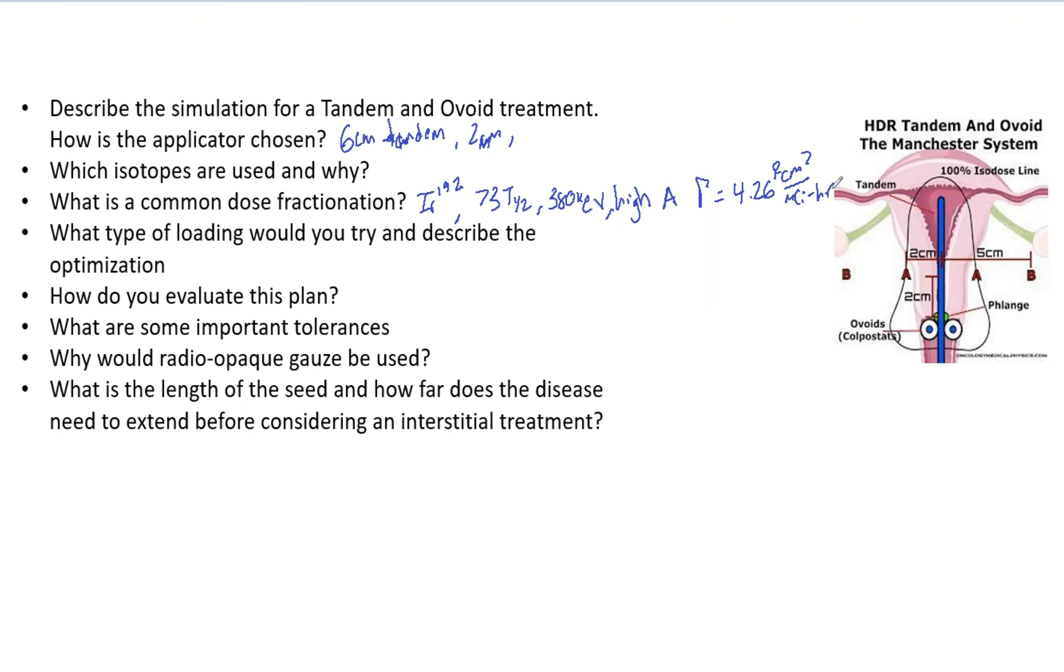Dose fractionation - this is going to depend on your clinic, know what your clinic does. My clinic we do 600 by 5 fractions, so that is a 30 Gray total treatment.